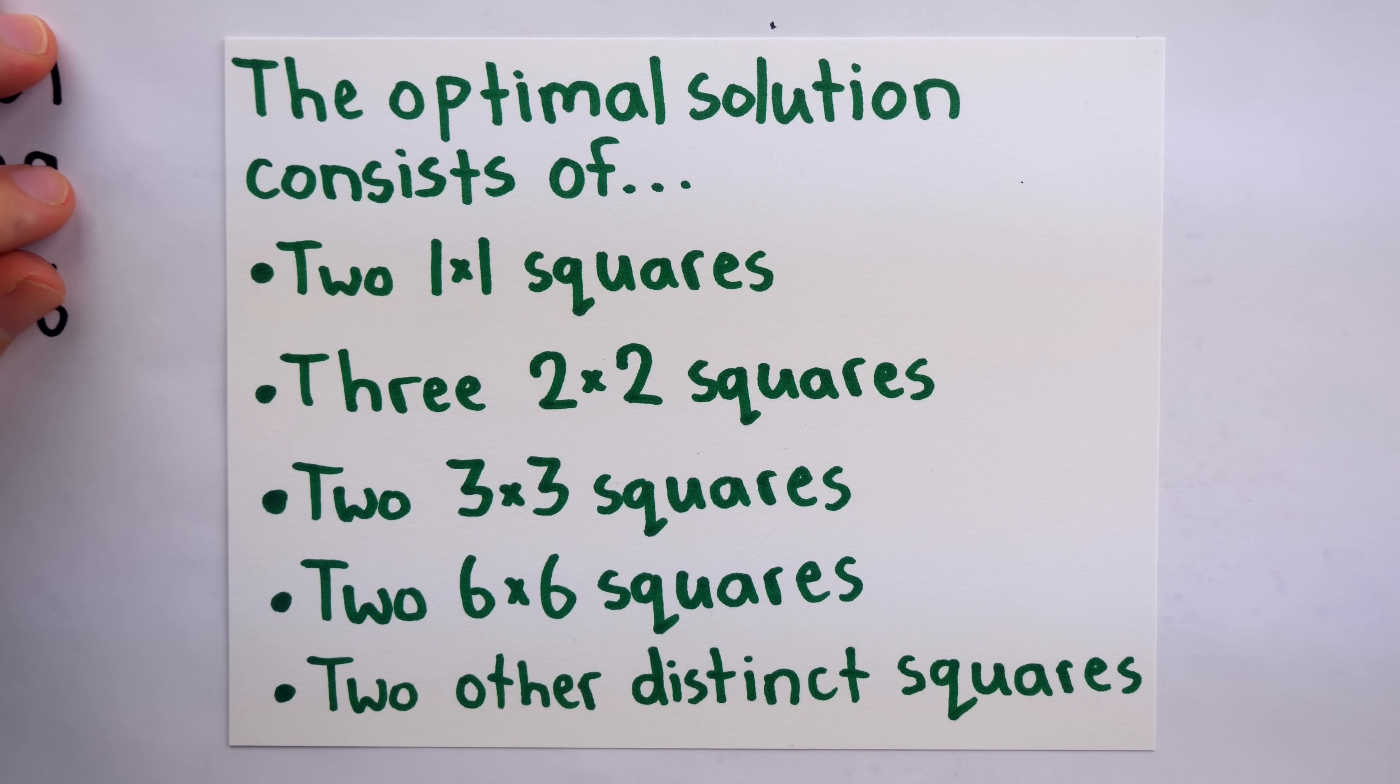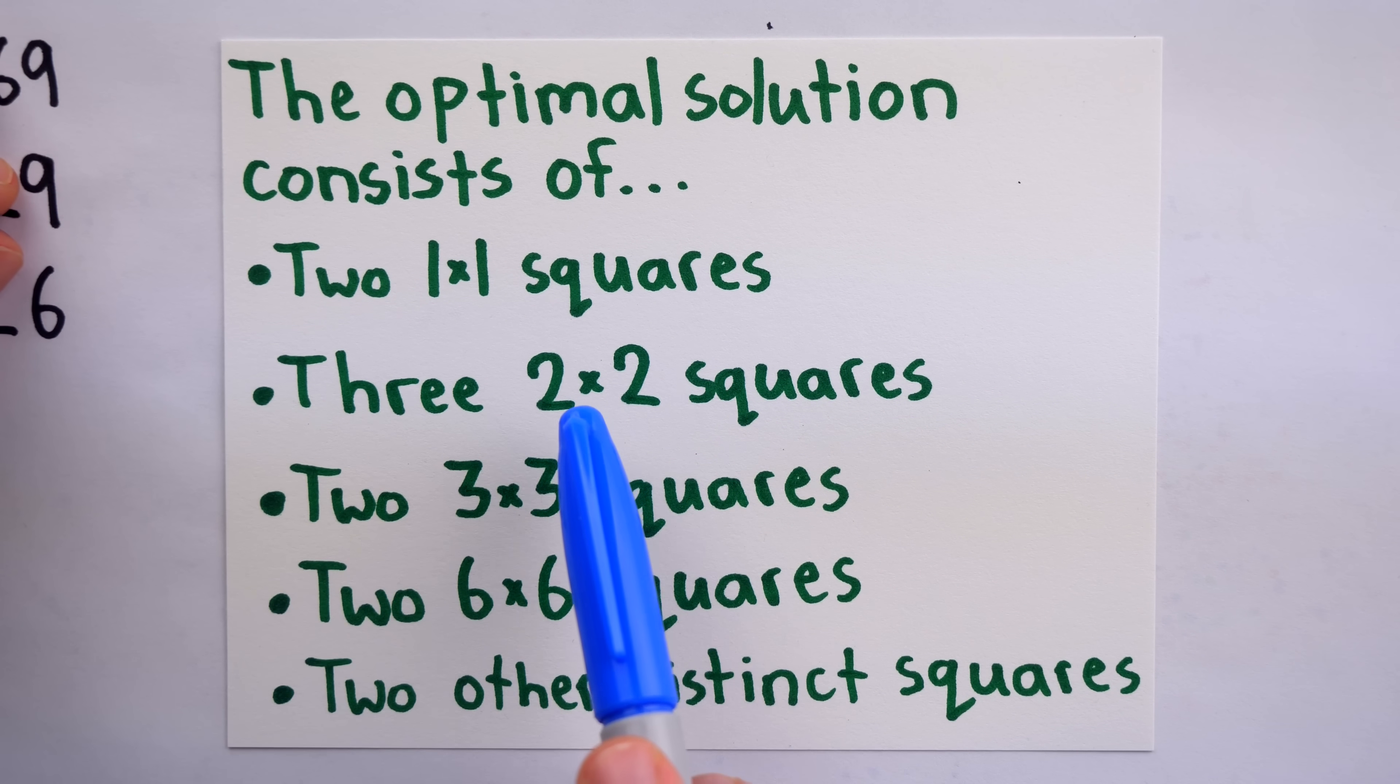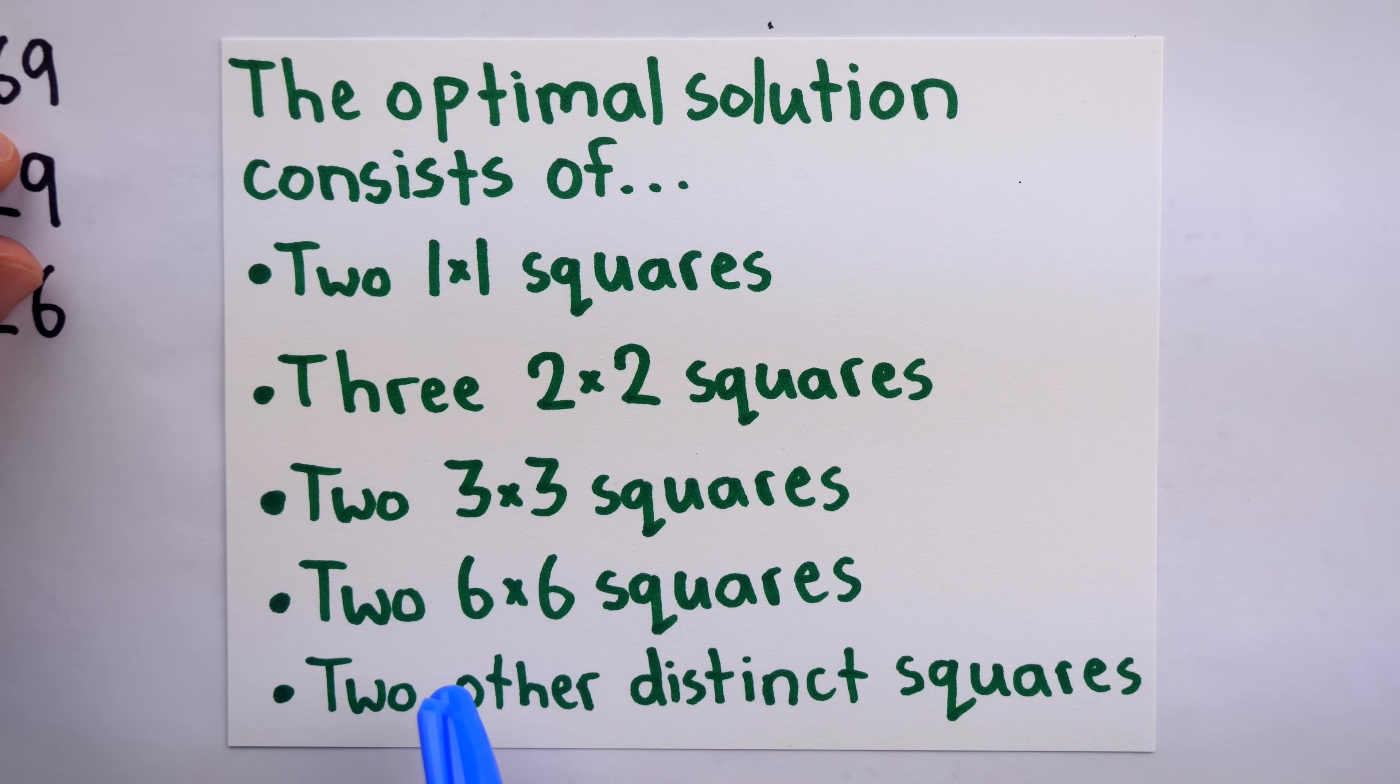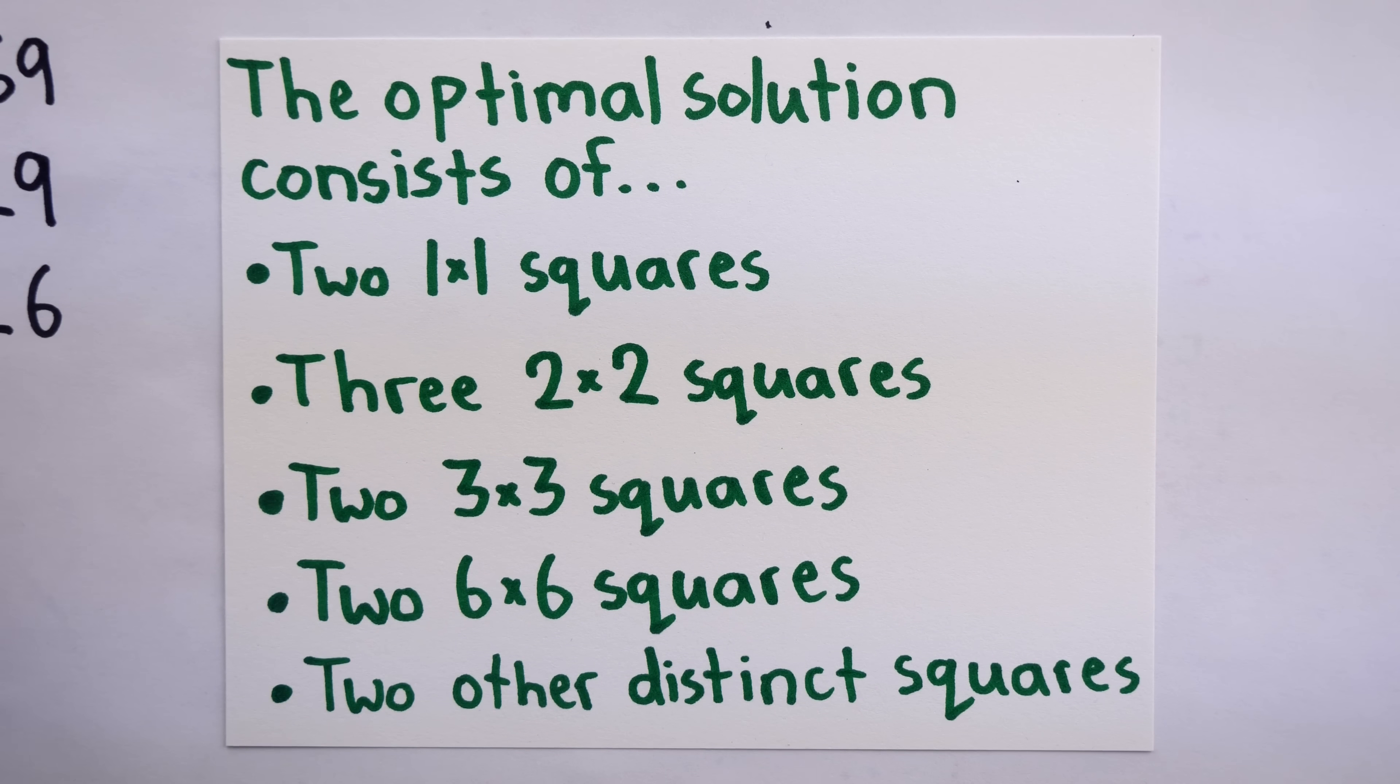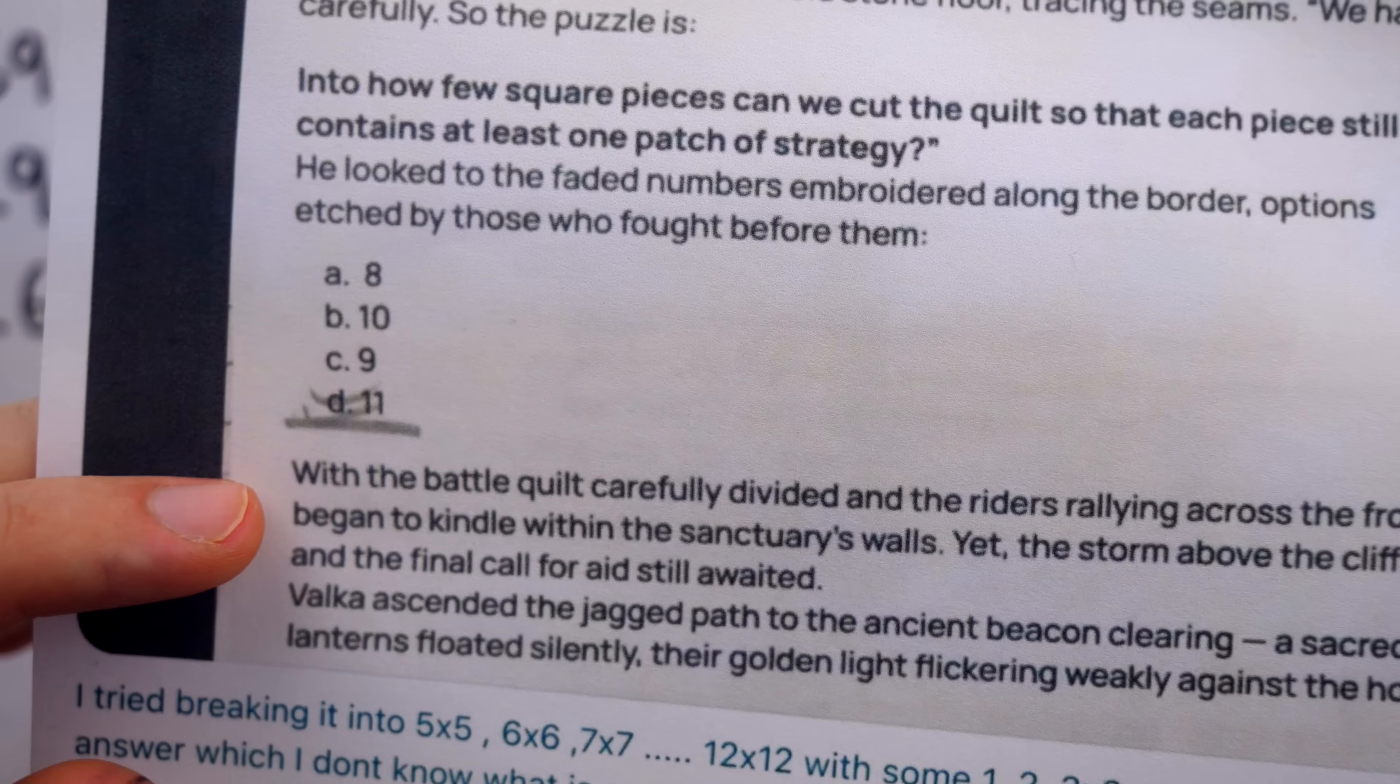The optimal solution consists of 11 squares total, 2 1x1 squares, 3 2x2 squares, 2 3x3 squares, 2 6x6 squares, and 2 other squares of distinct side lengths. And this means the answer to the question, which is to find the fewest number of square pieces we can cut the quilt into, is 11. Indeed, the correct answer is 11.